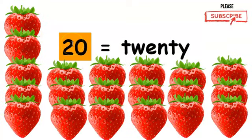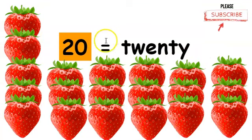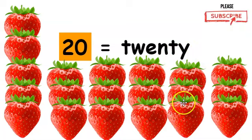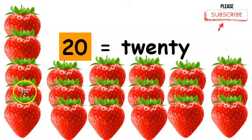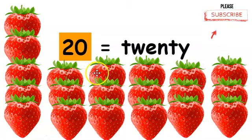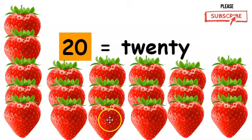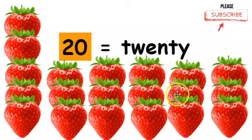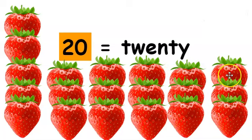This is the number twenty. This is how you write the word twenty. We should have twenty strawberries. Let's count from one to twenty. One, two, three, four, five, six, seven, eight, nine, ten, eleven, twelve, thirteen, fourteen, fifteen, sixteen, seventeen, eighteen, nineteen, twenty.